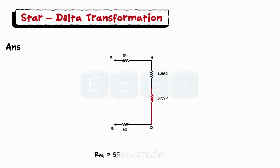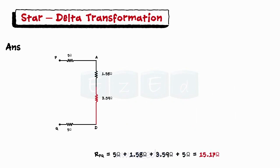Finally, we have four resistances connected in series, so we can simply add them to find the equivalent resistance between P and Q.